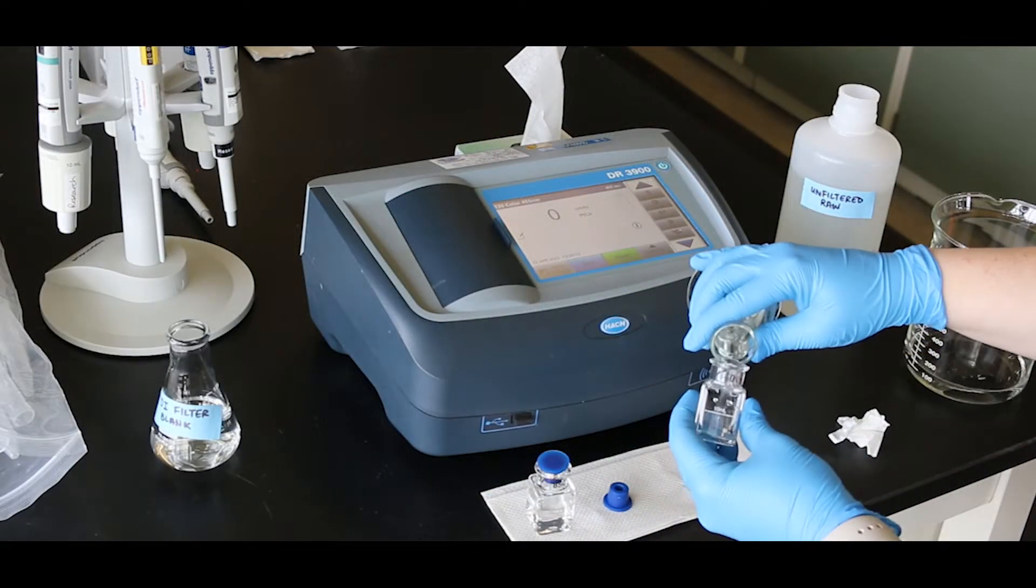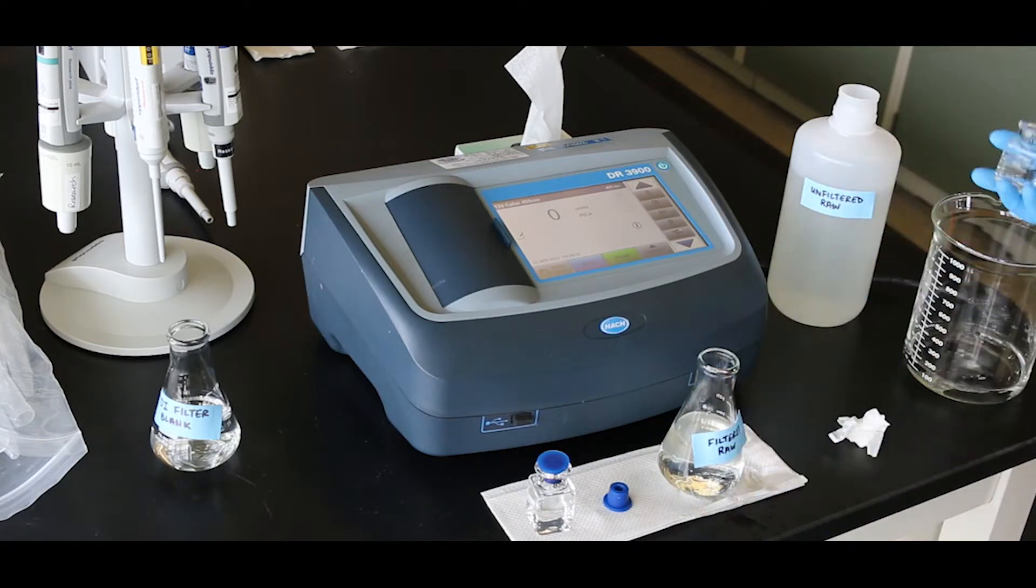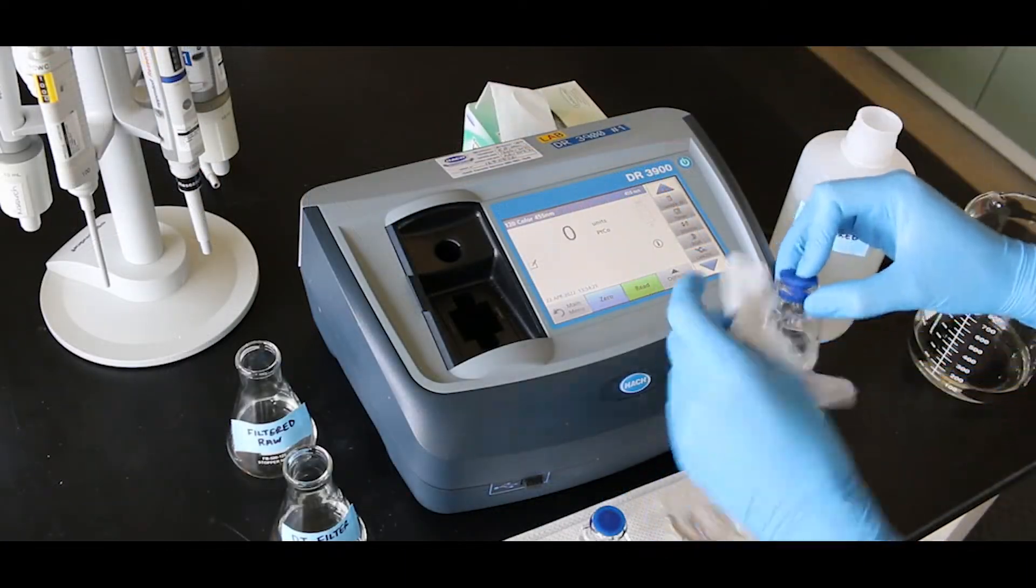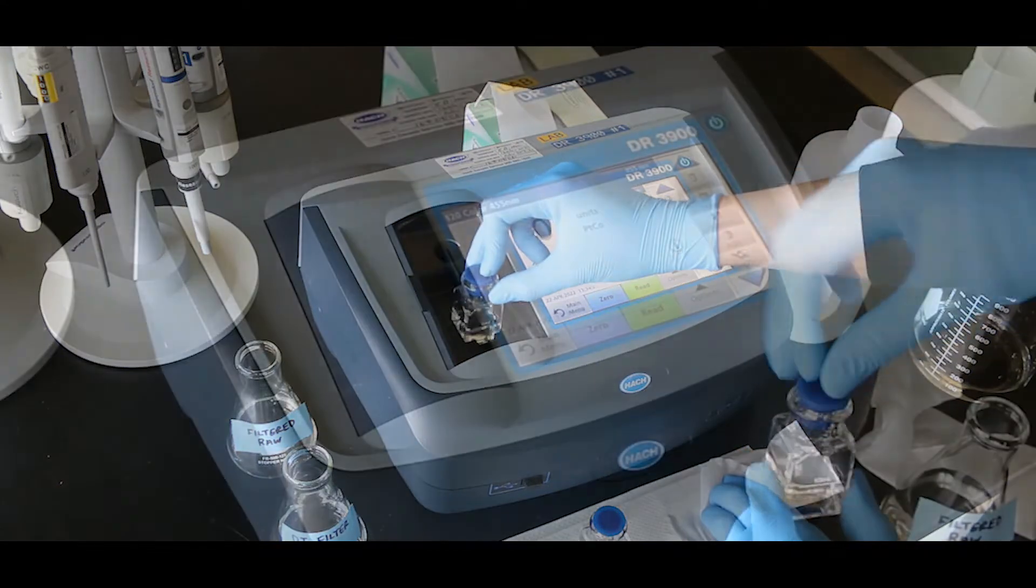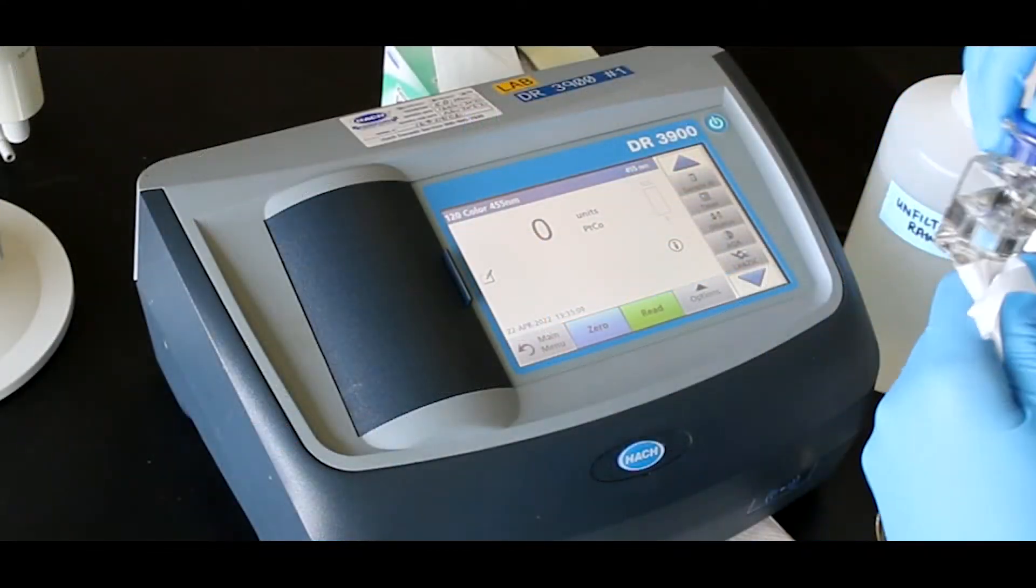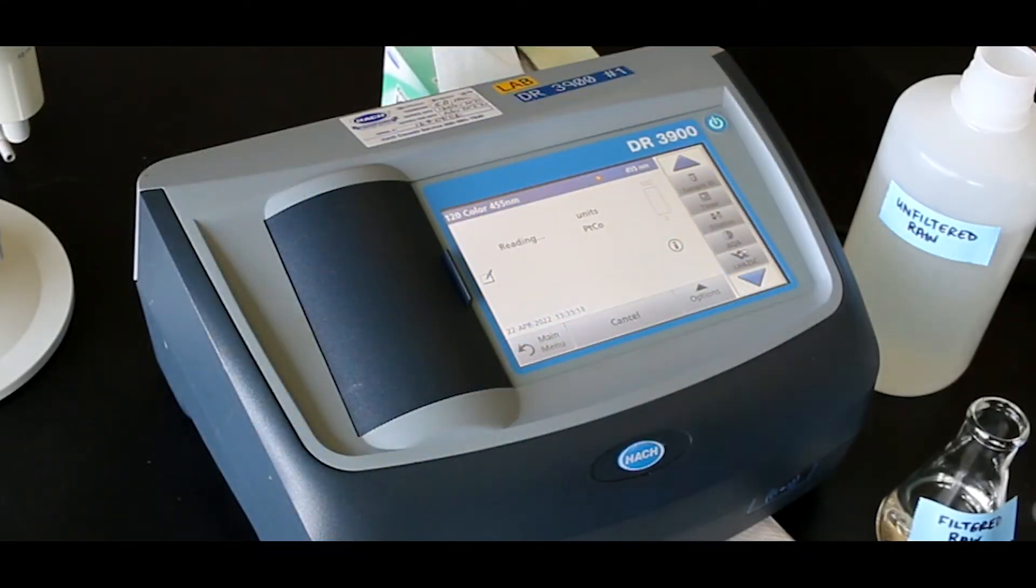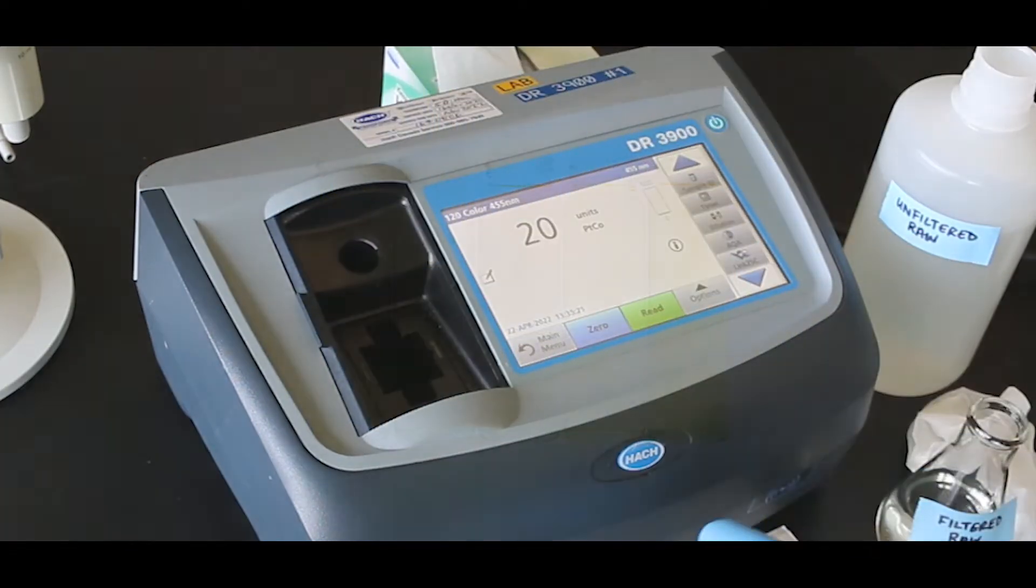Prepare the sample by rinsing and filling with the filtered water sample. Clean the outside of the sample cell and insert it into the instrument. Press read. This value will be your true color measurement. Record the results in platinum-cobalt units.